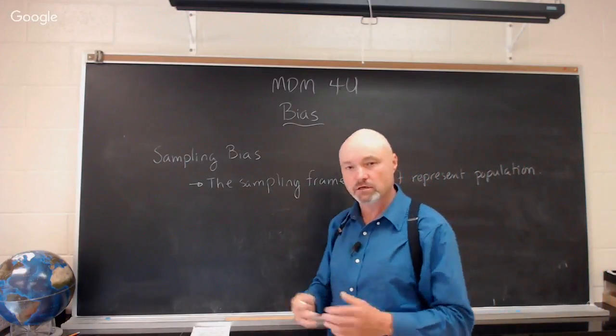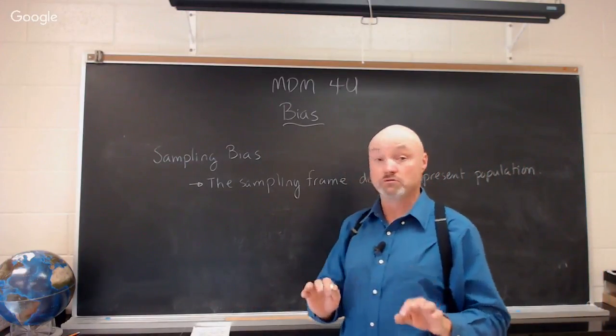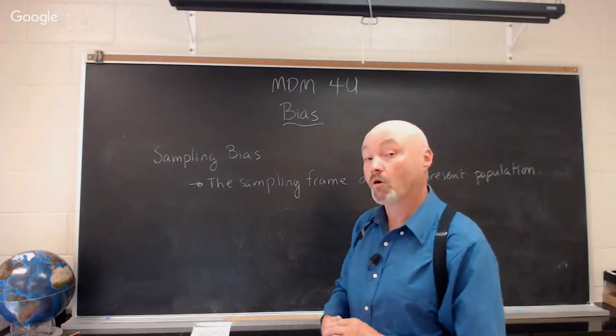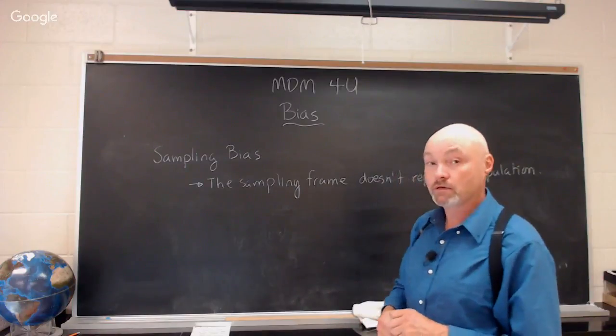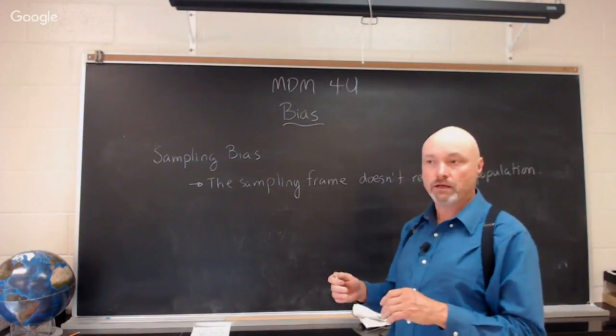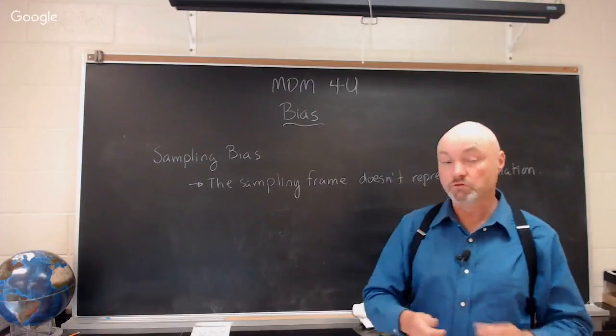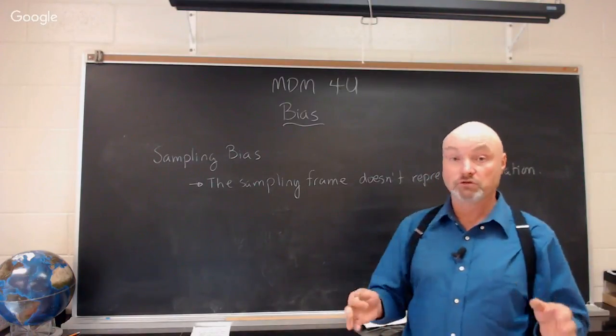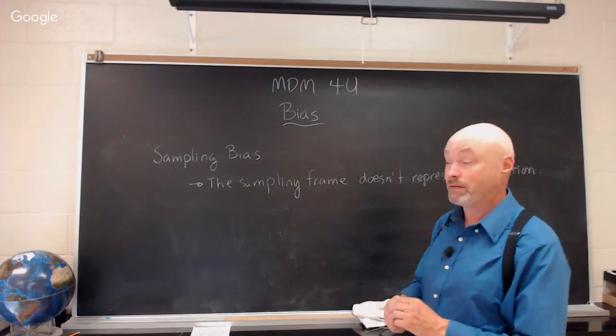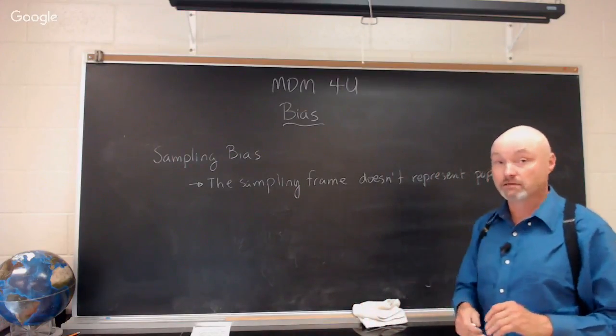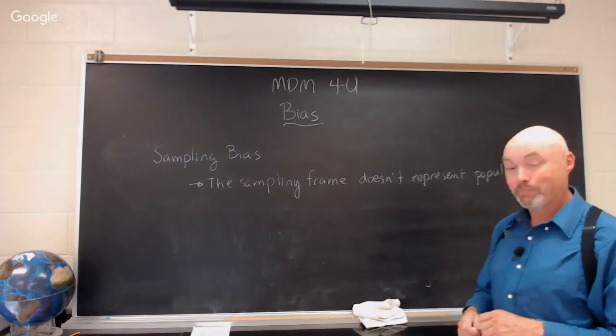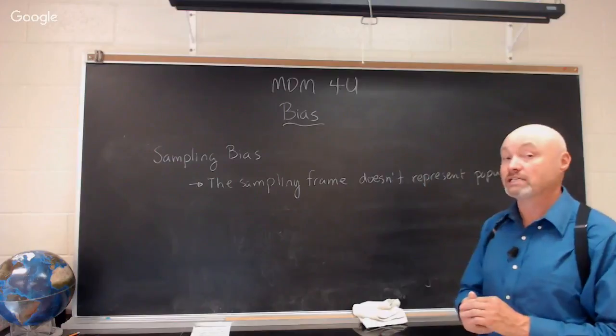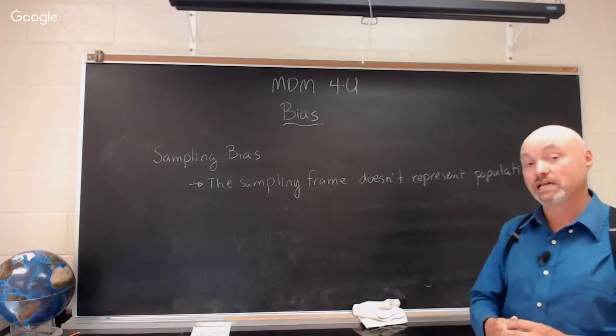But basically it works something like this. If you were at a badminton tournament and you said, 'Do you think the student council needs to spend more money on badminton gear or on library books?' Probably the answer is going to be the student council should spend money on badminton gear. The problem is you've chosen a group of people that are very enthusiastic about badminton. They may be enthusiastic about library books, but the whole population might be more enthusiastic about library books and less enthusiastic about badminton.